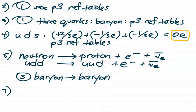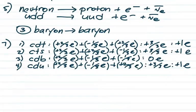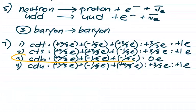Number seven: which combination of quarks could produce a neutral baryon? You have to walk through the quarks and see what they make. They're all viable baryons — made up of three quarks adding up to a whole number of charge. But question seven asks which one is neutral. Choices one, two, and four all come to plus one e. So the neutral one is choice three, coming in at zero elementary charges. All those charges come from page three of the reference table, the quark chart.